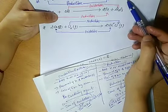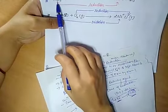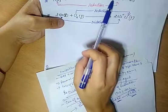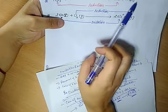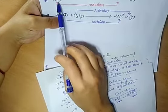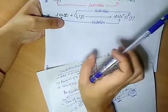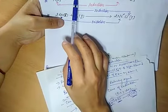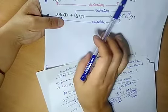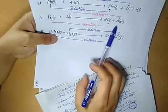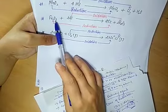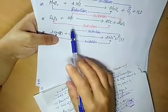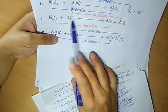In the reaction of Fe₂O₃ with aluminum (thermite reaction): aluminum is oxidized because it is adding oxygen, while Fe₂O₃ undergoes reduction because oxygen is being removed from it. Removal of oxygen is a reduction reaction.